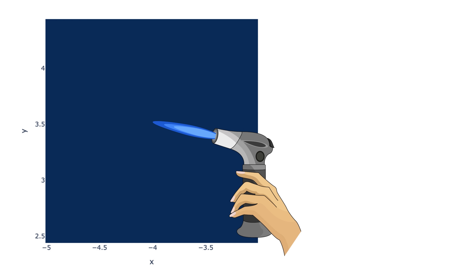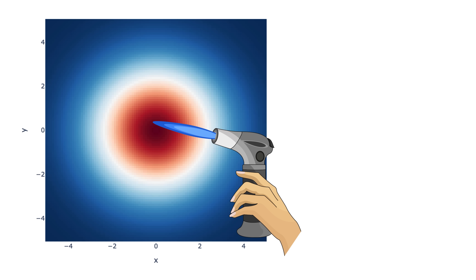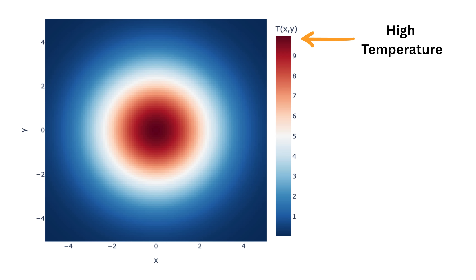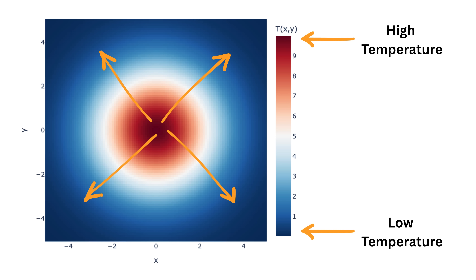Suppose you have a long metal plate, and at its center you use a blowtorch to heat it. The heat will spread out from the center, creating a temperature that changes across the plate. The center of the plate is very hot, and as you move away from the center, it gets cooler and cooler. The temperature gradually decreases in all directions from the center. If we wanted to draw this temperature on a map, we could use colors — red for hot areas and blue for cooler areas.